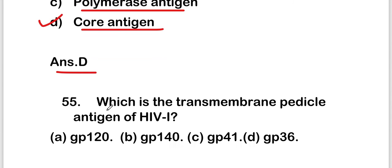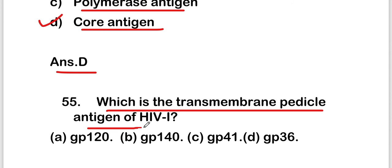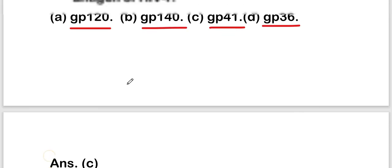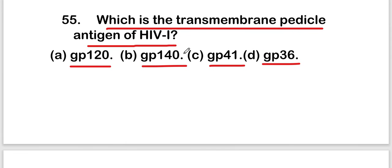The next question is: which is the transmembrane pedicle antigen of HIV-1? Options are GP120, GP140, GP41, or GP36. The right answer is option C, that is GP41 is the transmembrane pedicle antigen of HIV-1.